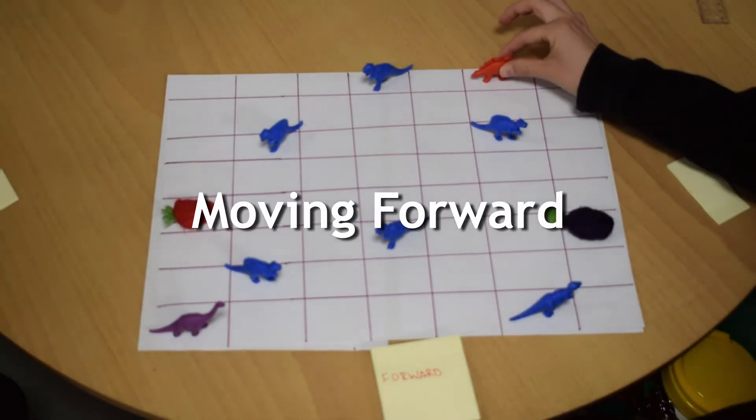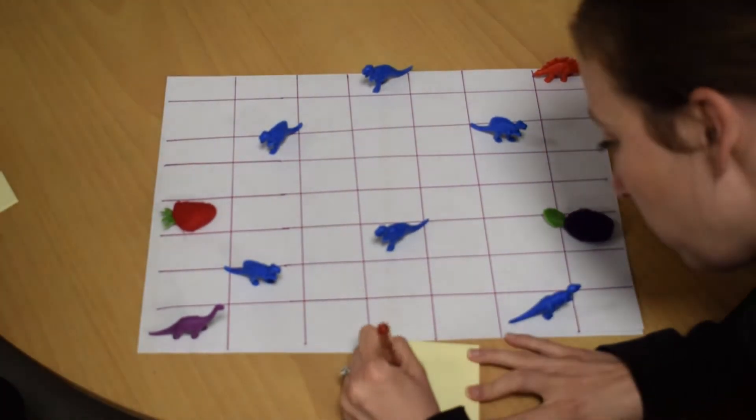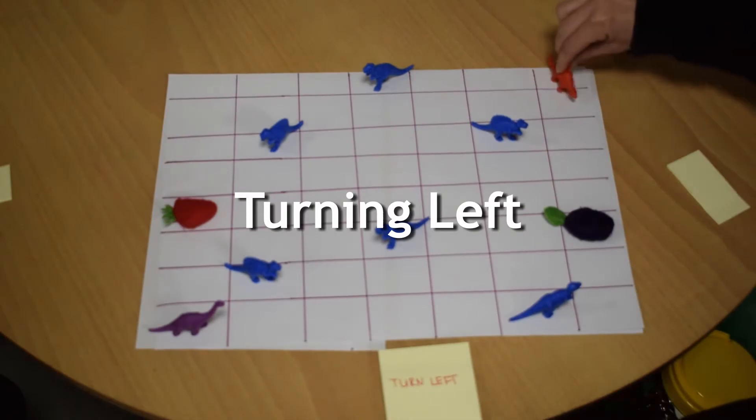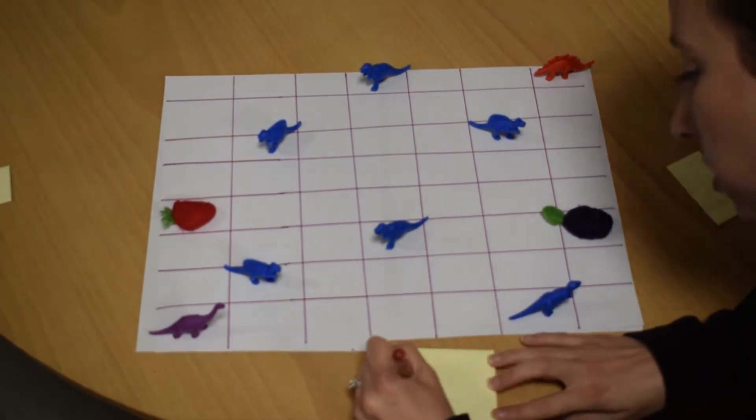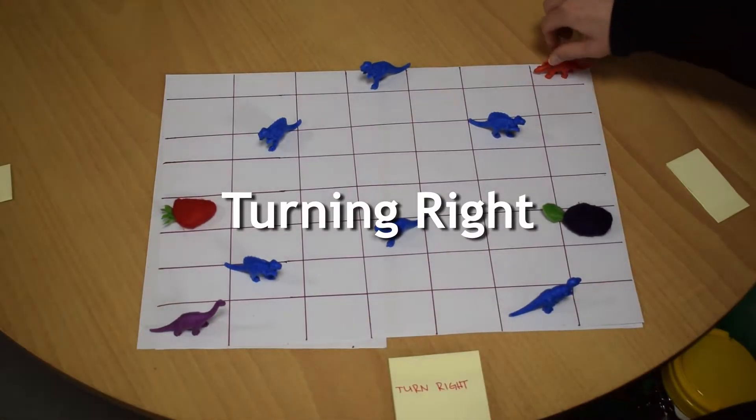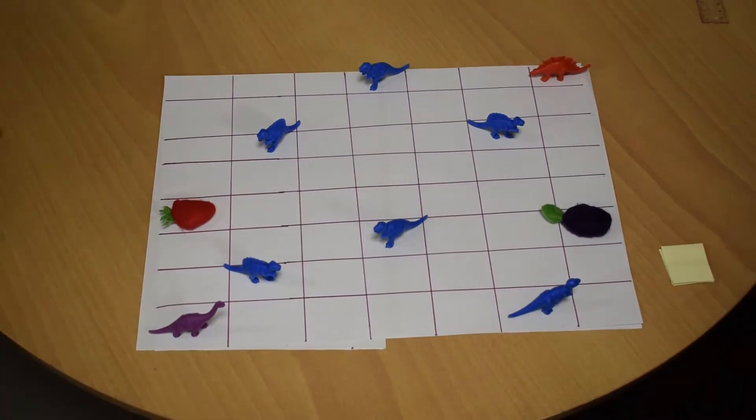To write our code, we have three commands: moving forward, turning left, and turning right. Because our dinosaurs can only move forward in the direction that they're facing, they need to actually have separate commands for turn left and turn right.